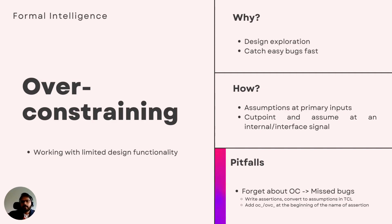Once you are comfortable with the design and have verified the functionality you decided to verify initially, you can go back to the over-constraints you set in the beginning and gradually disable them. You'll then start seeing more failures due to the newly enabled functionality. You can work on them, fix them, and then disable more over-constraints, and so on.